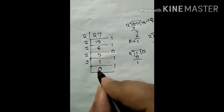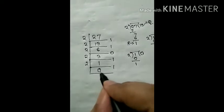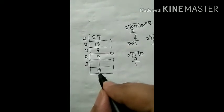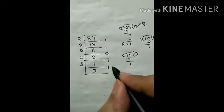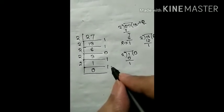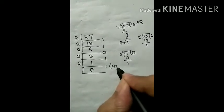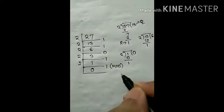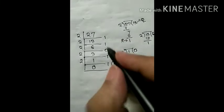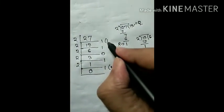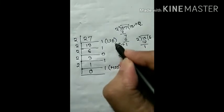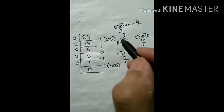When 0 comes in this quotient area, then we will stop the process. And we will mark the last remainder as MSB, that is most significant bit, and the first remainder as LSB, that is least significant bit.